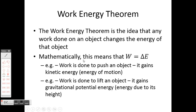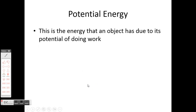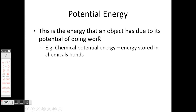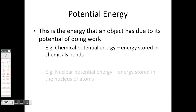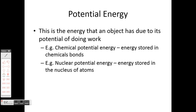There are lots of different types of potential energy. Potential energy is simply the energy that an object has due to its potential of being able to do work. Chemical potential energy is energy stored in chemical bonds — something like an explosive has lots of chemical energy stored in its bonds because if that energy is released it will cause lots of things to move very quickly. Nuclear potential energy is energy stored in the nucleus of atoms, and if we split that nucleus or fuse two together, we release some of that energy.